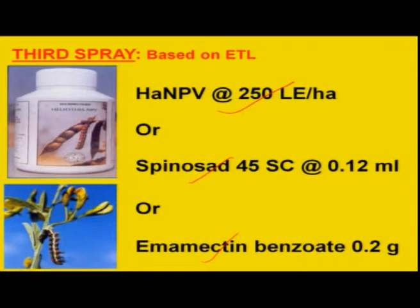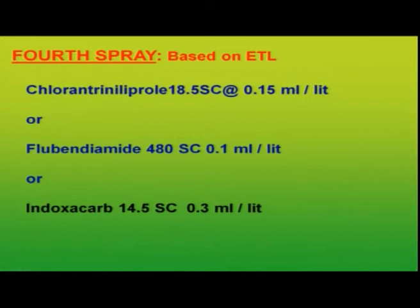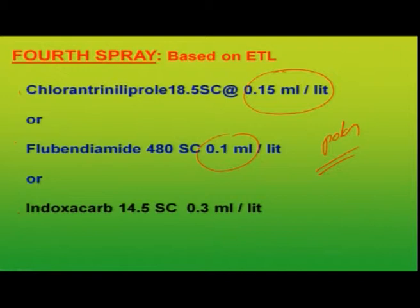The dosage for these greener molecules is very low: 0.12 ml per liter of water or 0.2 grams per liter of water. As a fourth spray, because this is the stage where larvae feed on developing pods inflicting maximum damage, some of the most effective new molecules — again greener molecules — have been recommended by scientists across the country. The quantity recommended per liter is very low compared to conventional insecticides, where 2 to 5 ml per liter was recommended.